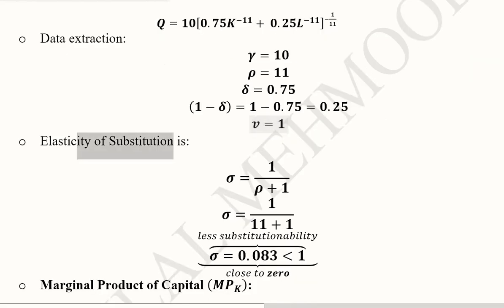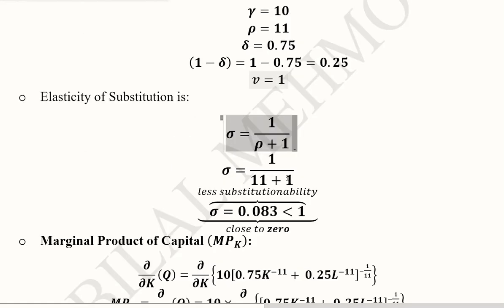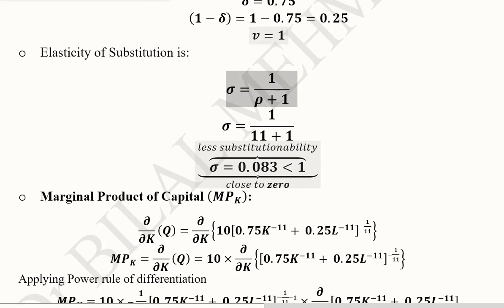The elasticity of substitution can be found easily by using this formula that we have learned already. The value of rho was 11, so we substitute it here and sigma is equal to 0.083, which is less than 1. It means that there is less substitutability, and the production function is likely to be close to the Leontief production function because it has no substitution ability between the inputs.